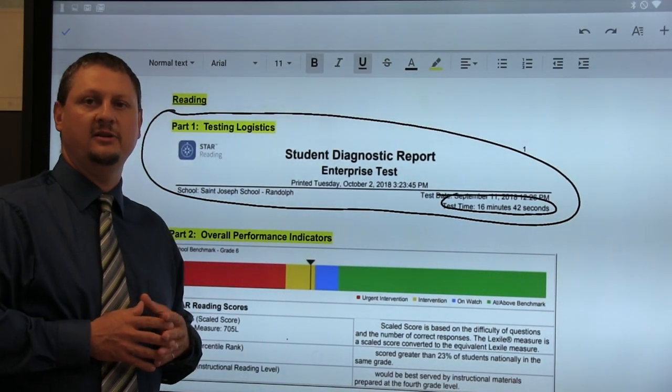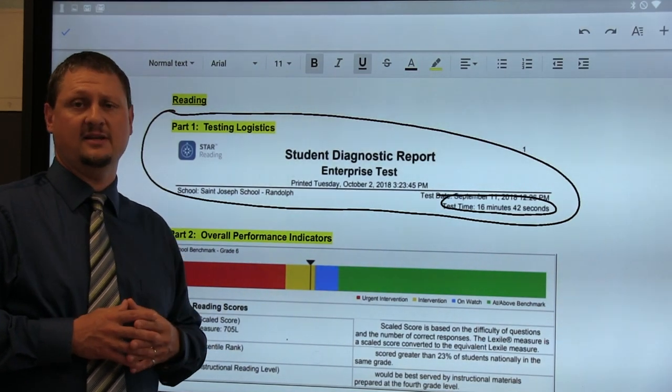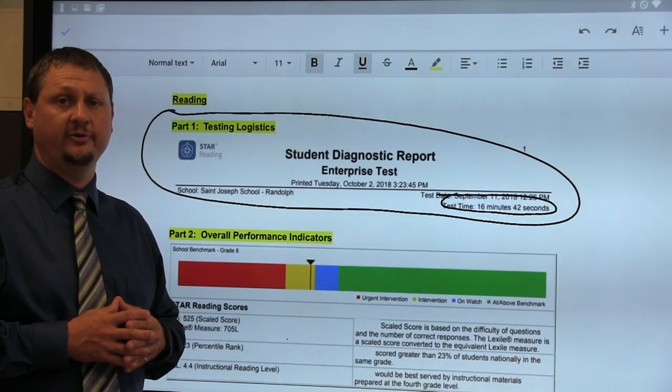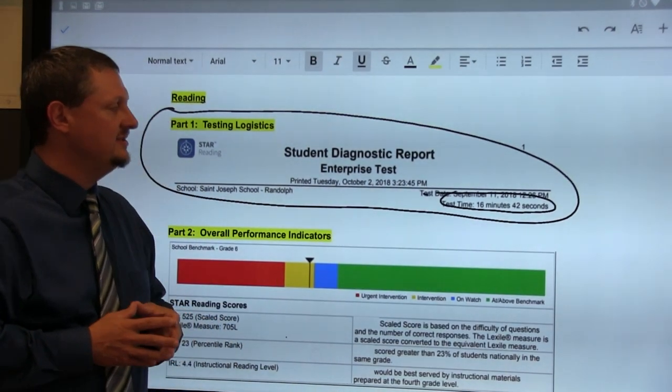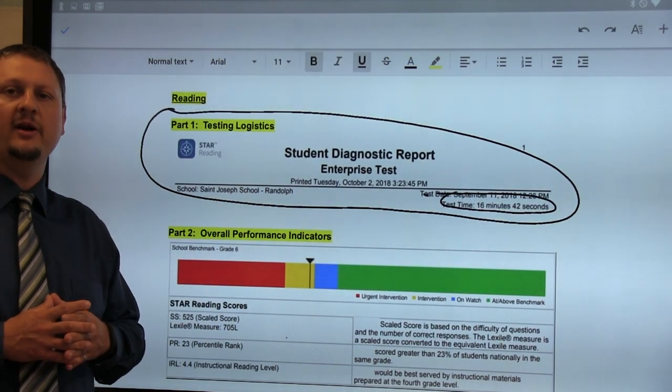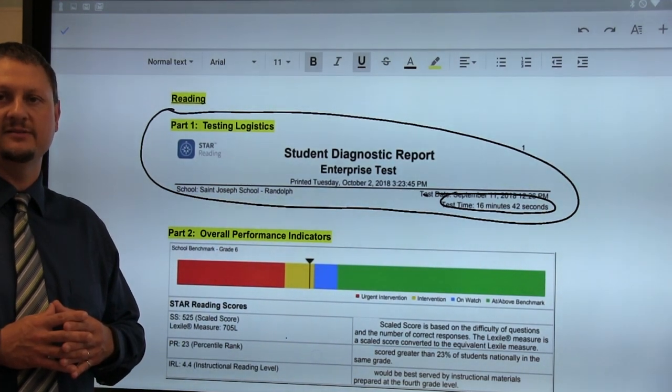This is an opportunity for us as educators and as parents to talk to them about the importance of the assessment and what it does to help both them and us design instruction to help them improve. So if I were to talk to this student at home, if this were my student, I would tell them hey you know you spent 16 minutes on this assessment next time why don't you try your best, try a little bit harder and let's see if we can work for a good solid 20 or 25 minutes.